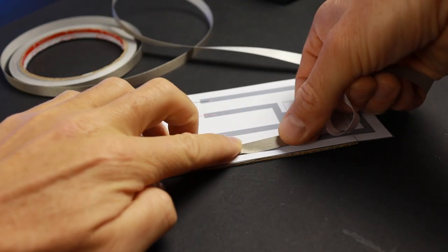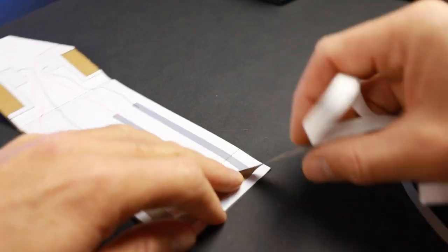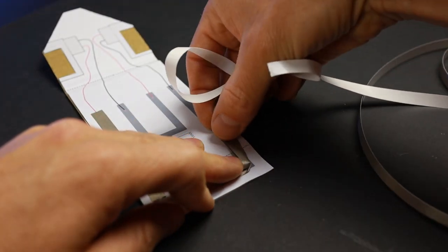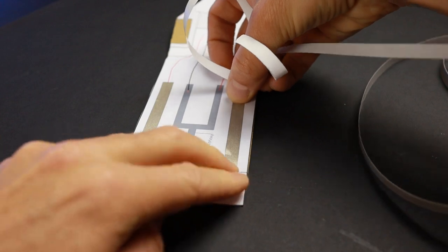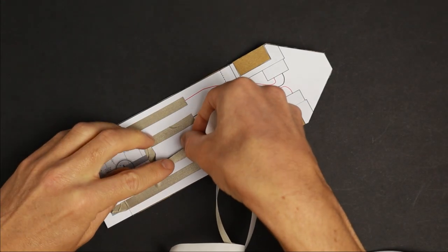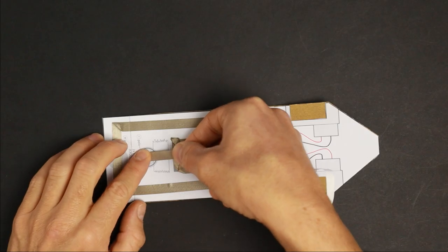Next, trace the circuit shown in the template with conductive tape. If this is your first time working with conductive tape, I recommend my paper circuits basics video. I link to it in the video description.